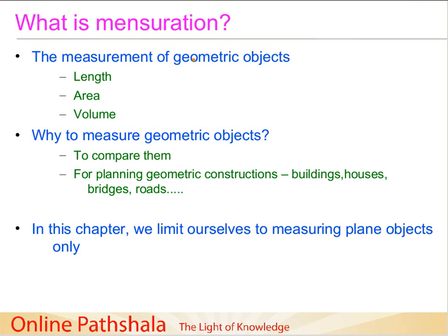So we do that measurement. For example, if you take your table top, you would be interested in knowing the length of one of its sides, or you would be interested in knowing the area of the table top — so that you can figure out whether your computer can be placed on it or not. Similarly, when you have a glass or a container you need to fill with liquid, you would think about how much liquid the container can hold, and that is where the concept of volume comes in. So essentially there are three quantities we are interested in measuring: length, area, and volume.